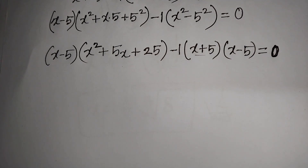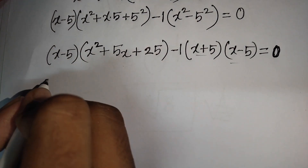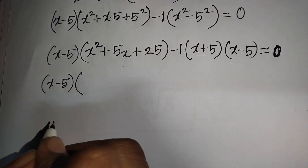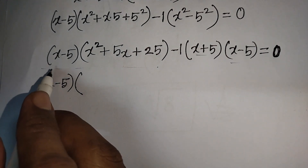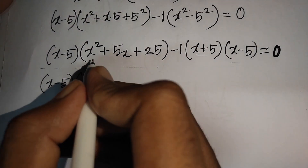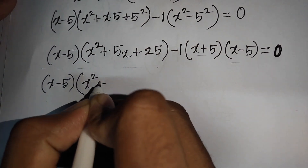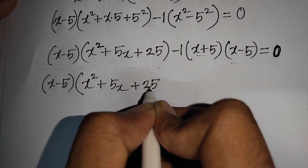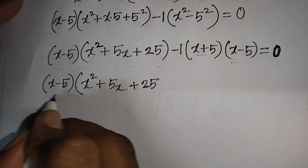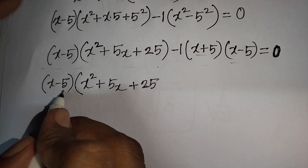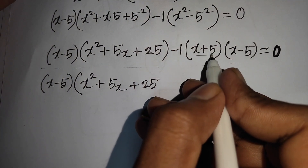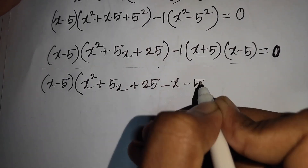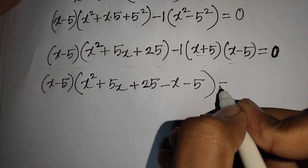We see that (x - 5) is common, so we take (x - 5) out. This (x - 5) cancels, leaving x² + 5x + 25. Then dividing by this, the other (x - 5) cancels, giving minus 1 times (x + 5), which is minus x minus 5, bracket close, equal to 0.